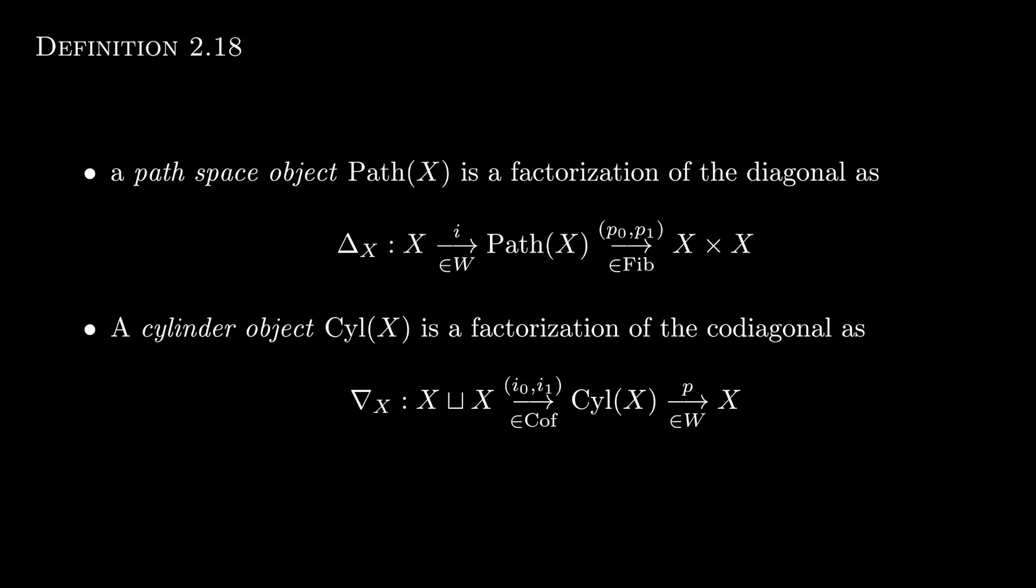Again, these are characterized via diagonals and co-diagonals. So a path space object is a factorization of the diagonal, i.e. a map from x to x cross x, as a weak equivalence followed by a fibration.